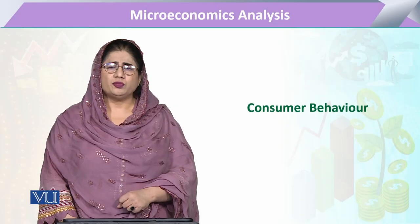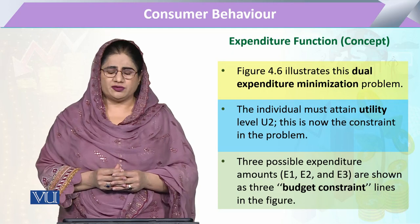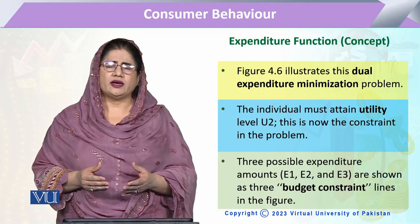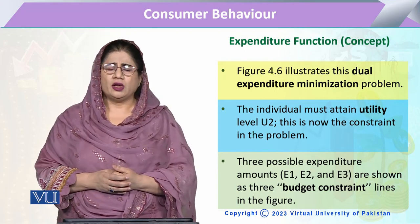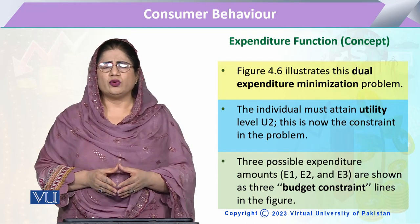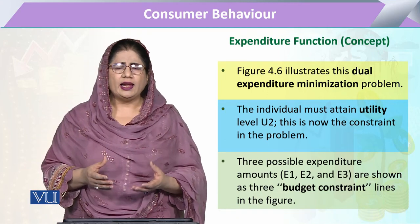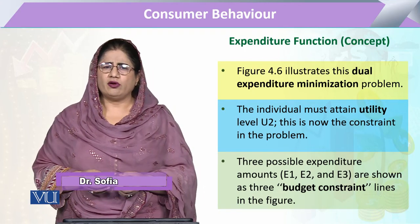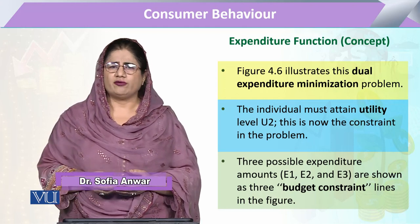Under the chapter of consumer behavior, we are going to continue the concept of expenditure function. In the previous module, we discussed why we prefer the expenditure function and its significance. In this module, we are going to study how this expenditure function can help the consumer in deciding the required minimum level of expenditure to attain the desired level of utility.